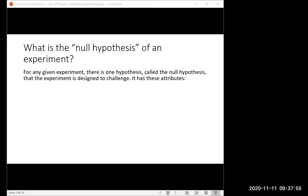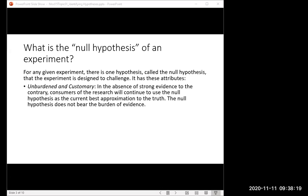Now, what's the null hypothesis of an experiment? So for any given experiment, there's one hypothesis called the null hypothesis and the experiment is designed to challenge that, to give it the opportunity to be wrong. The null hypothesis has some attributes that you can use to identify it in a word problem. Unburdened and customary. In the absence of strong evidence to the contrary, consumers of the research, people who read your paper, will continue to use the null hypothesis because it's the current best approximation to the truth. The null hypothesis does not bear the burden of evidence. It's what your reader already believes.